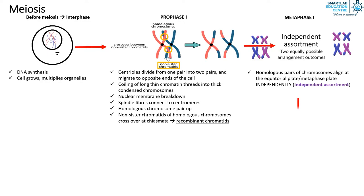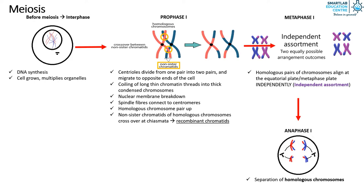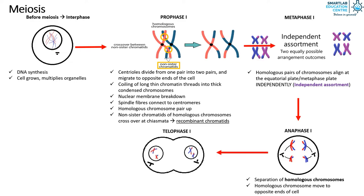Followed by metaphase 1 is anaphase 1. In this stage, there is separation of homologous chromosomes, and they move to opposite ends of the cell, as seen in the diagram. After anaphase 1 is telophase 1, where the separated chromosomes reach opposite poles, the nuclear membrane reforms, and the chromosomes uncoil.